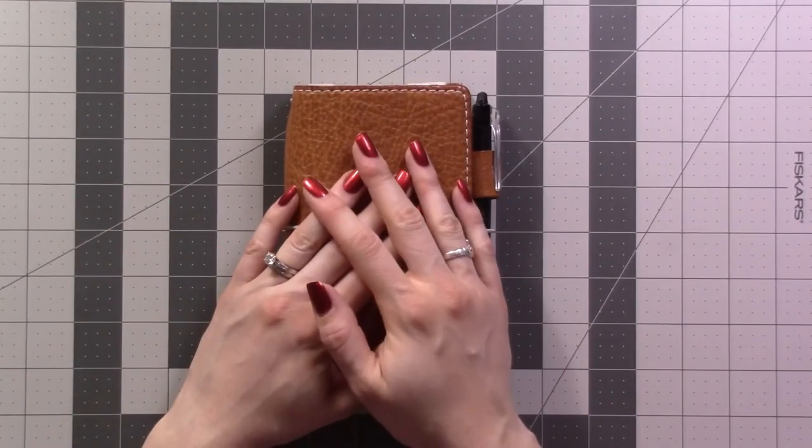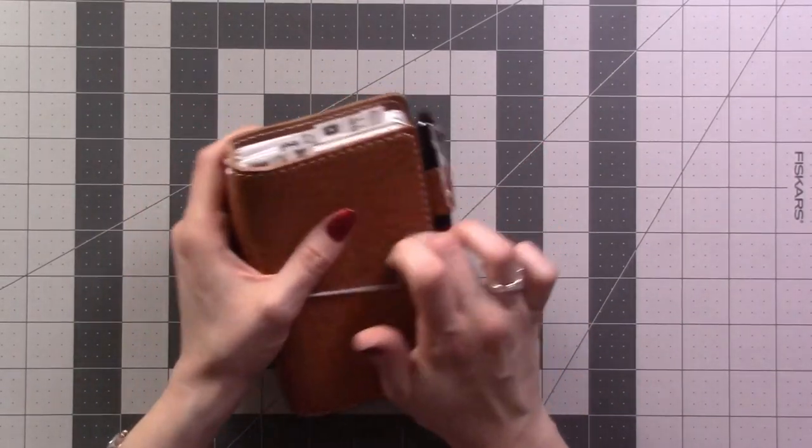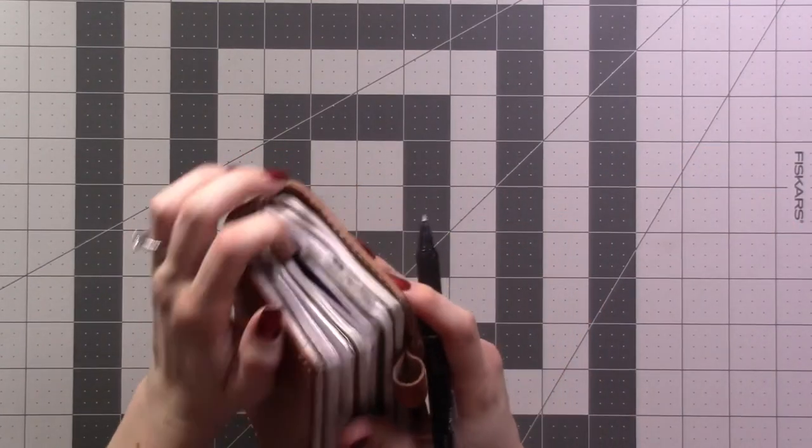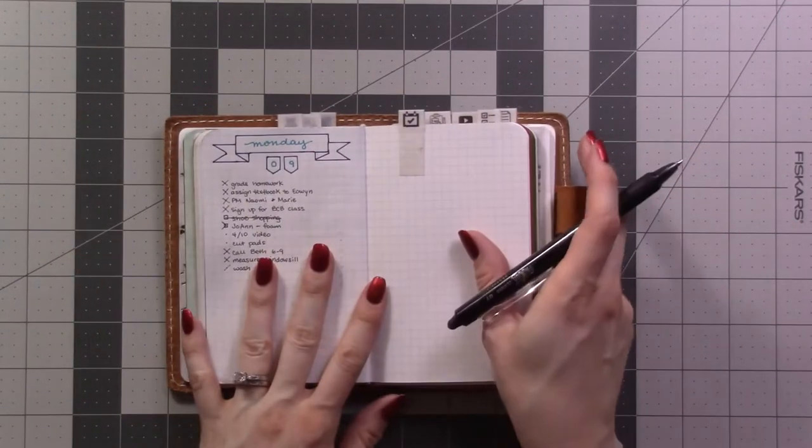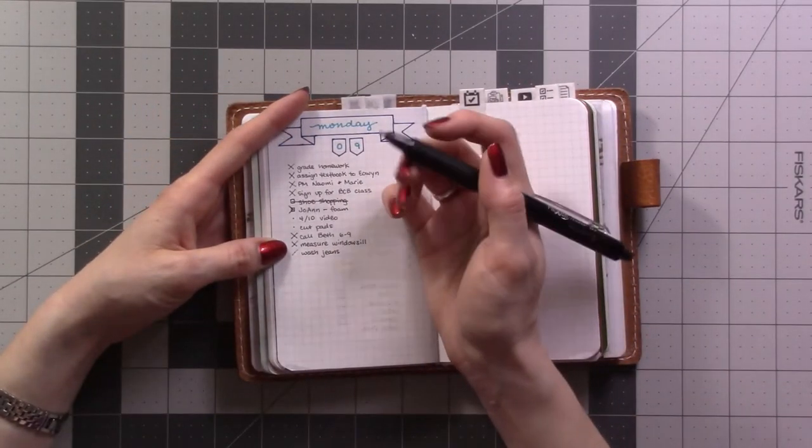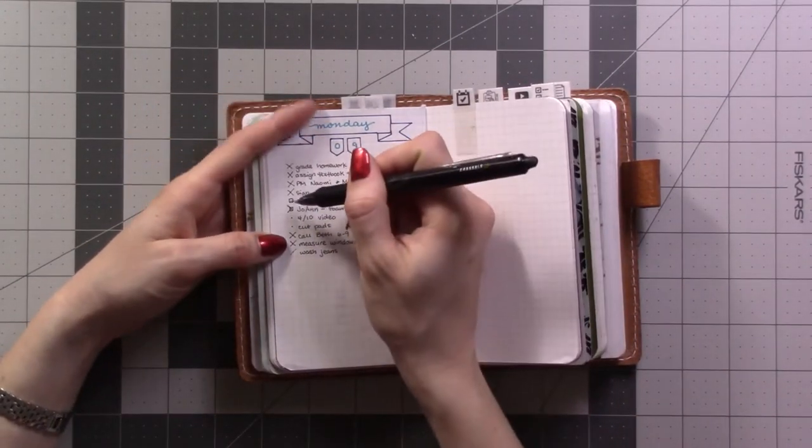Hey guys, welcome back to one month in my bullet journal. It is April 10th, so we're a third of the way in. Here's my daily. You'll see I've gotten stuff done. I had a couple errands that I wanted to do today.